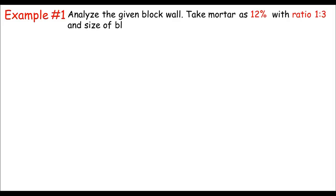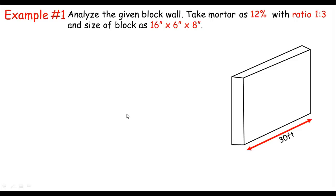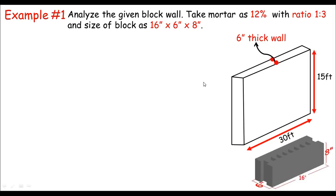Now let's do an example. We are asked to analyze a given block wall where the mortar is taken as 12%, the ratio of mortar is 1:3, and the size of block is 16×6×8 inches. The length of the block wall is 30 feet, height is 15 feet, and the thickness of the wall is 6 inches, equal to the thickness of the block.